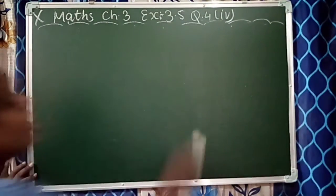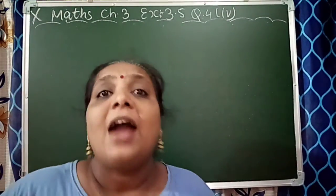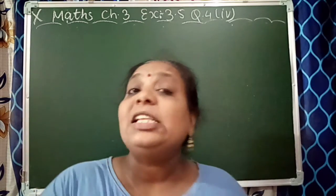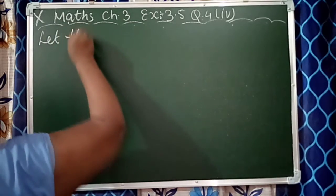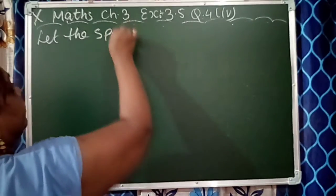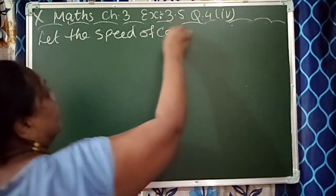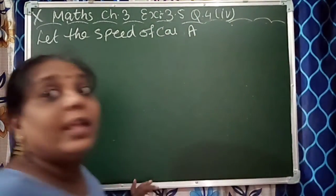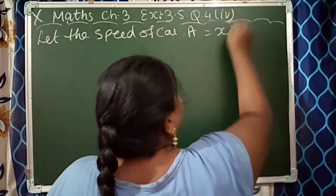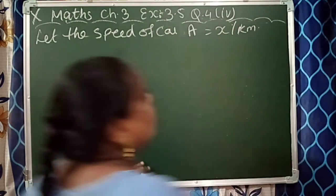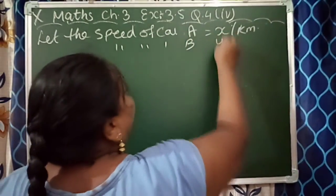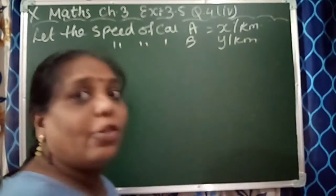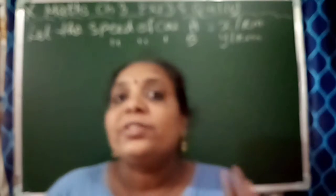First case: let the speed of car A be x km/h and the speed of car B be y km/h. Now let's look at the distance traveled by each car.